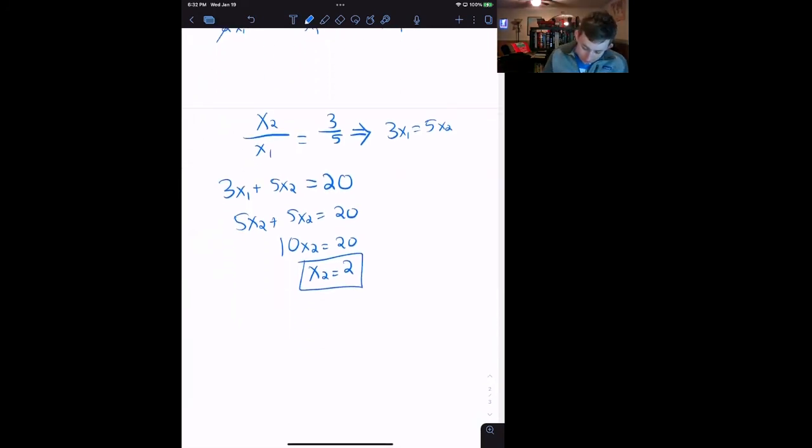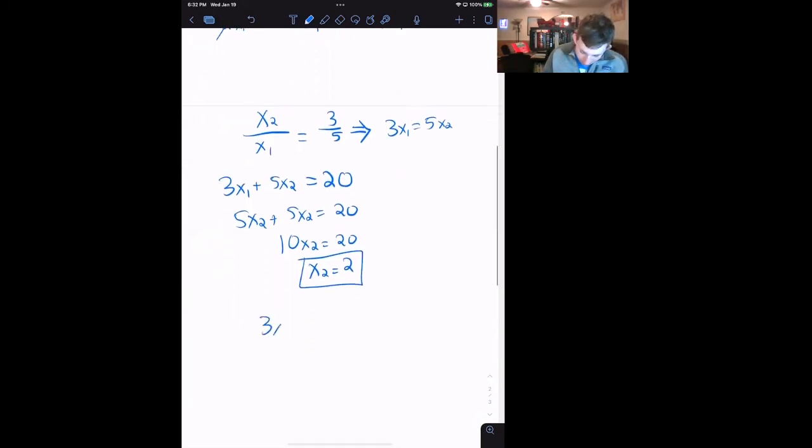And that means that 3X1 plus 10 equals 20. So 3X1 equals 10, so X1 equals 10 over 3.